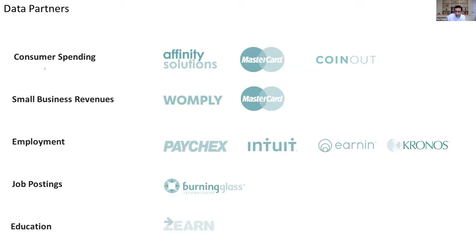We get data on small business revenues by aggregating credit and debit card transactions from companies that have a set of businesses they're working with — seeing something like a 10% slice of the US economy from a company called Womply, complemented by data from MasterCard. We then look at employment data from payroll companies: Paychex processes about 10% of payroll in the US, and Intuit is another big player. Combining these companies, we have data on about 13 million workers — employment patterns, hours of work, wages, and so forth. For job postings, we get data from Burning Glass, which covers essentially all job postings in the United States.